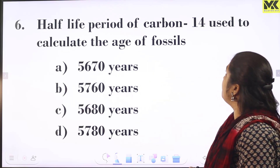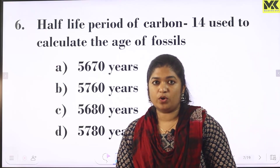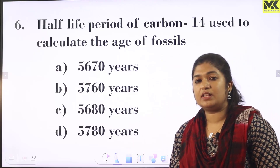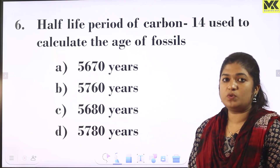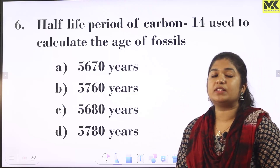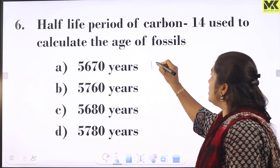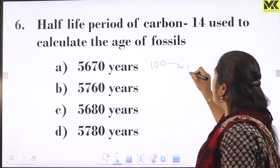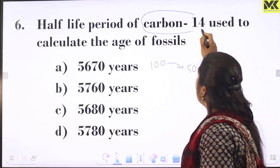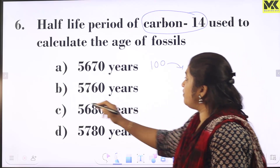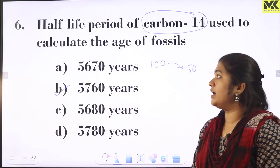The half-life period of carbon-14 is used to calculate the age of fossils. Carbon-14 is an isotope used in the archaeological department for dating fossils. Half-life is the time for an initial concentration to reduce to half — for example, 100 grams reduces to 50 grams.